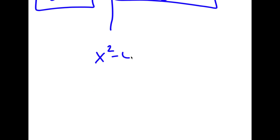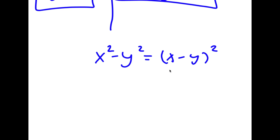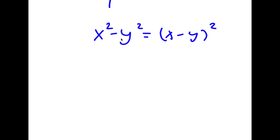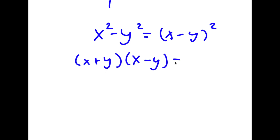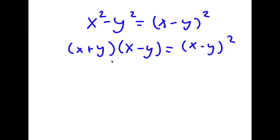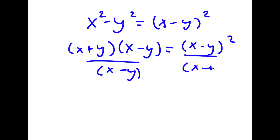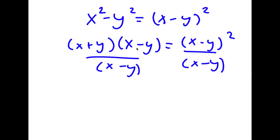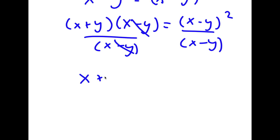Now I have another method of solving this. I have x squared minus y squared equals x minus y squared. I'm going to rewrite x squared minus y squared as x plus y times x minus y. Then I divide both sides by x minus y. These cancel out and I'm left with x plus y is equal to x minus y.